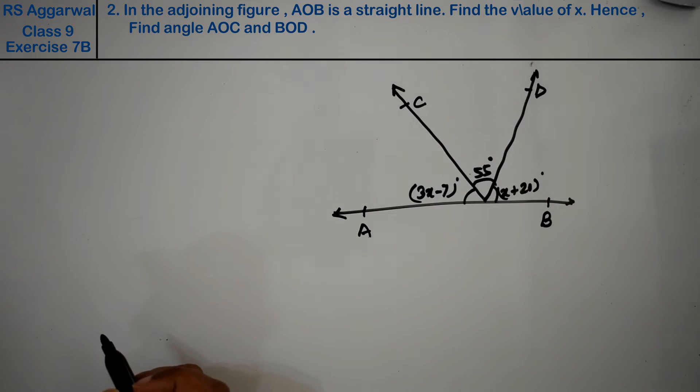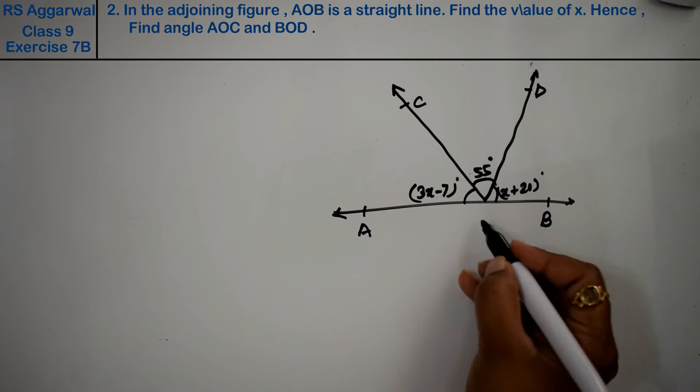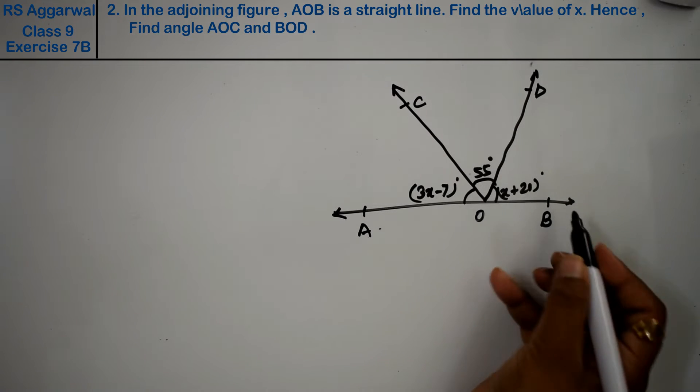Now what he is saying: AOB is a straight line. This is point O. A, O, B is a straight line.